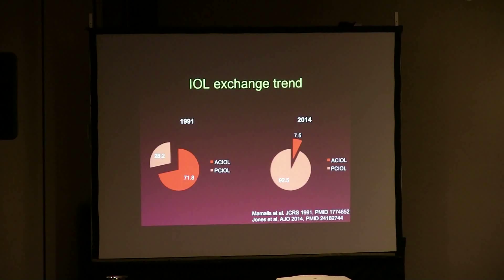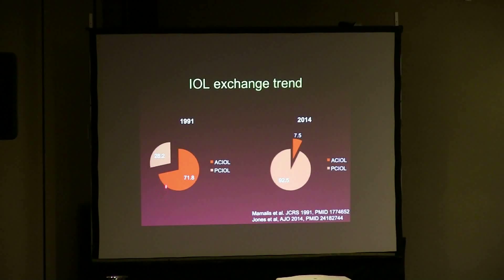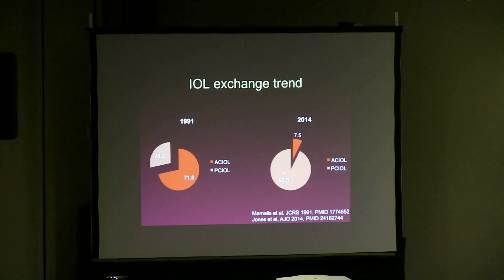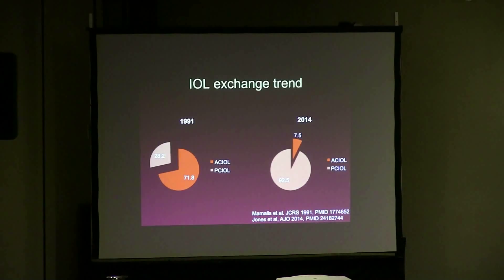Interestingly, looking at the IOL exchange trend: in 1991, most secondary IOLs implanted were actually AC IOLs, with only about a quarter in the posterior chamber. Versus in 2014, the trend has reversed — more than 92% are now placed in the posterior chamber, and only about 7.5% in the anterior chamber.